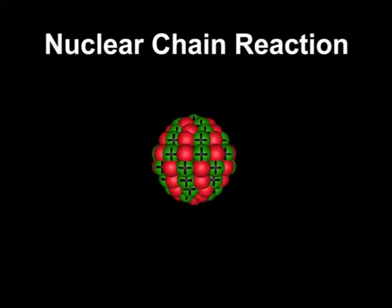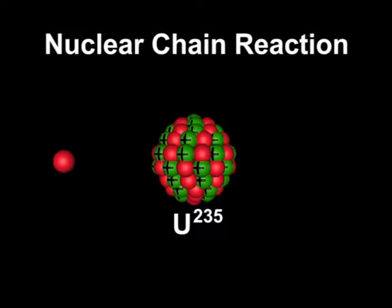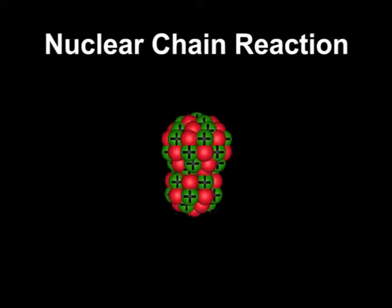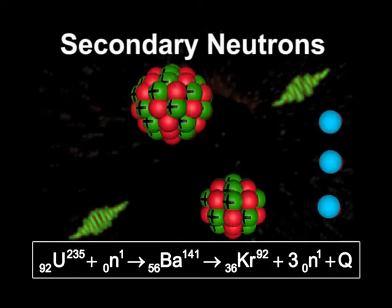Nuclear Chain Reaction. The fission of uranium-235 by thermal neutrons goes like this. The three free neutrons produced, which are called secondary neutrons too,